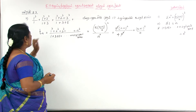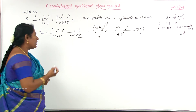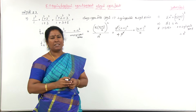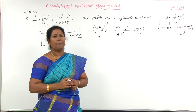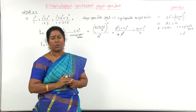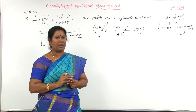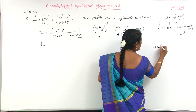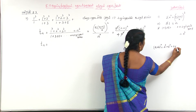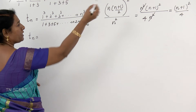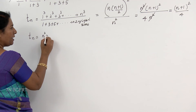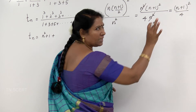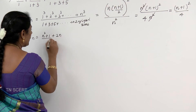So nth term tn equals n plus 1 the whole square by 4. I will expand n plus 1 the whole square using A plus b the whole square formula. A plus b the whole square equals a square plus b square plus 2ab. So n plus 1 the whole square means n square plus 1 square plus 2 of AB, which is 2n. So tn equals n square plus 1 plus 2n by 4.